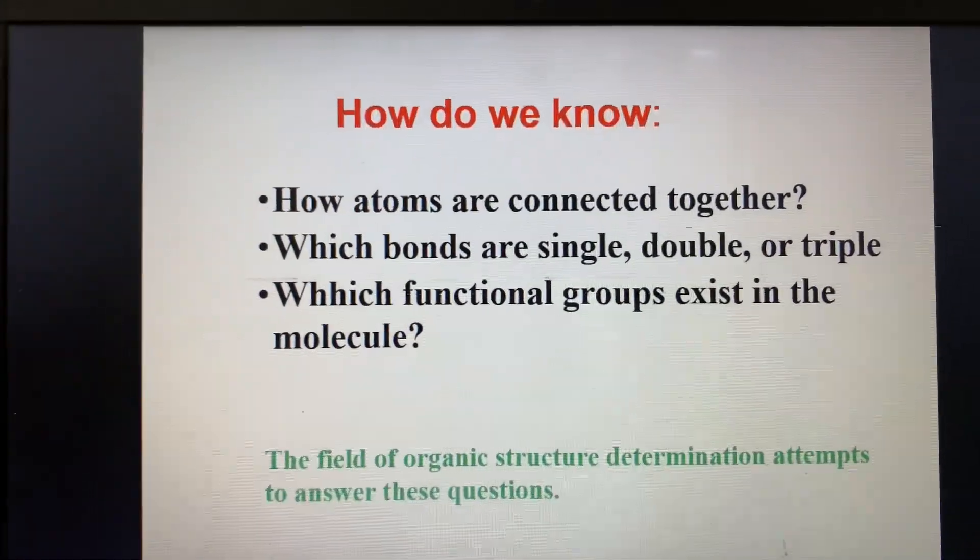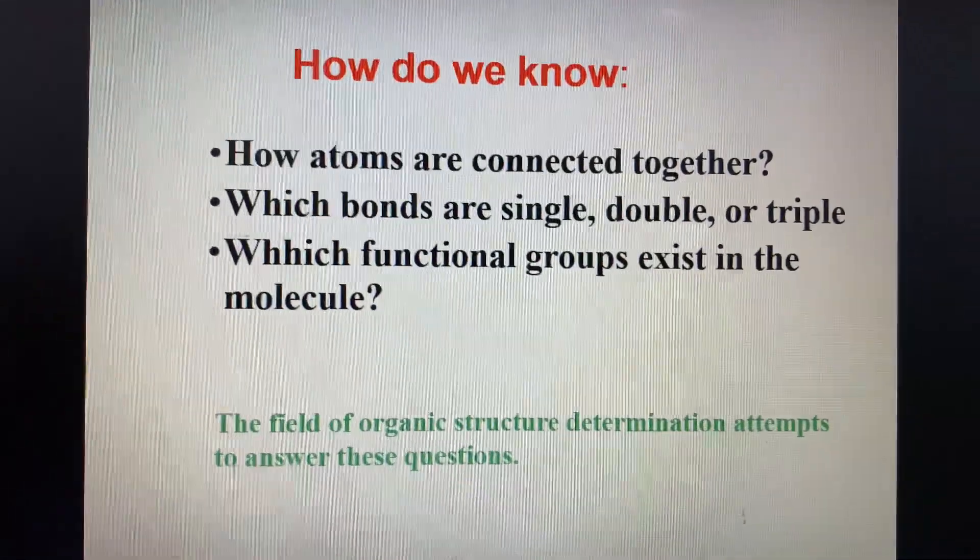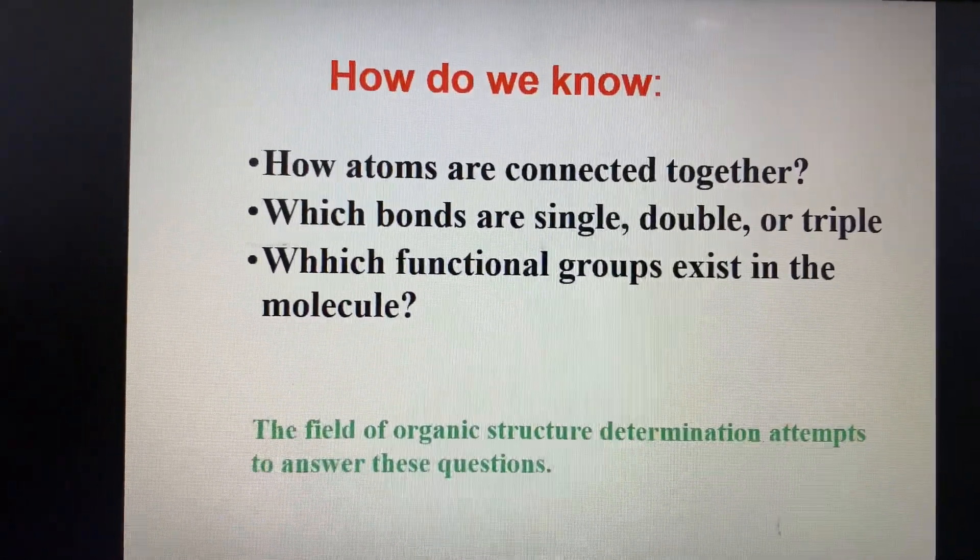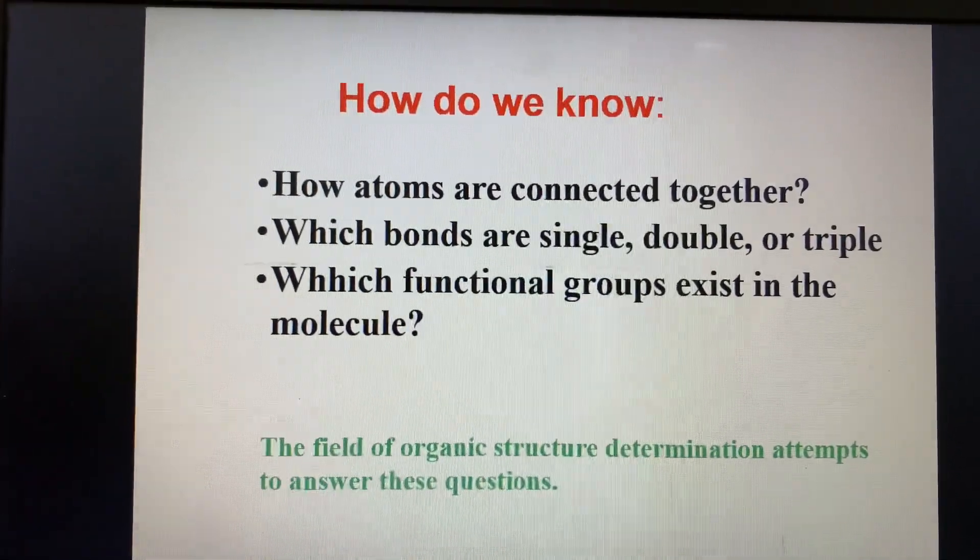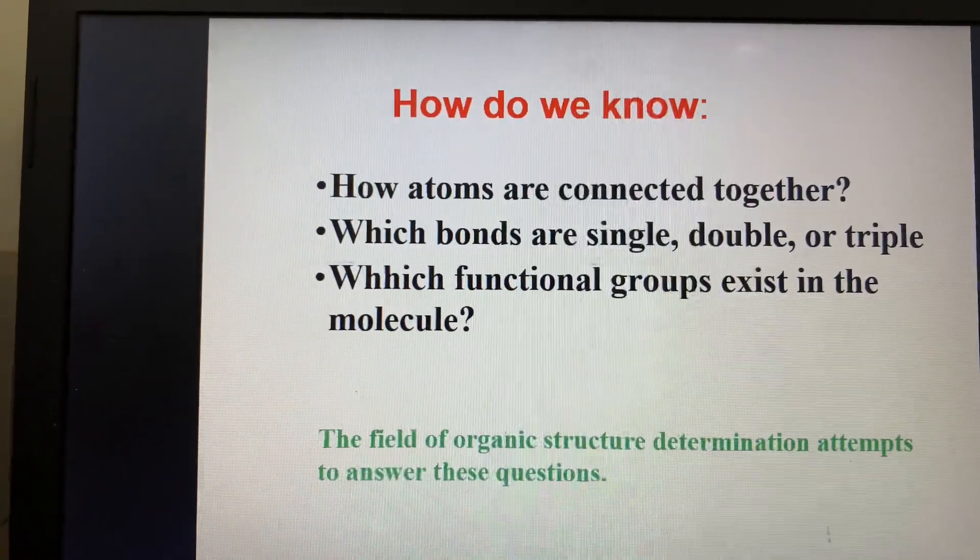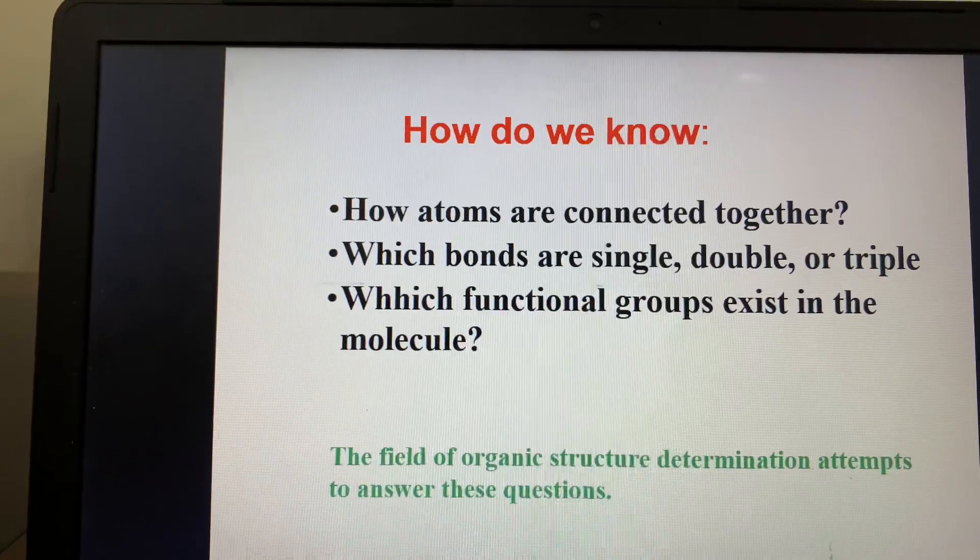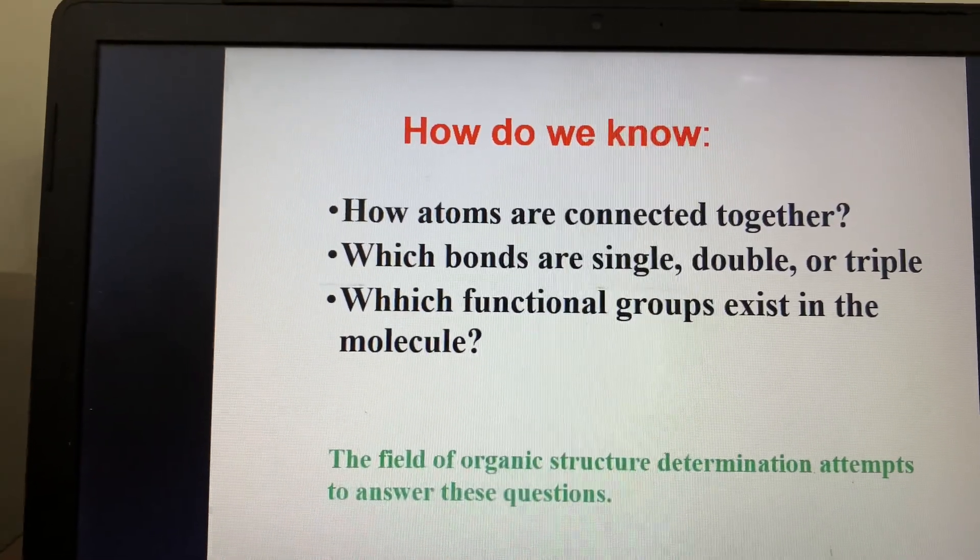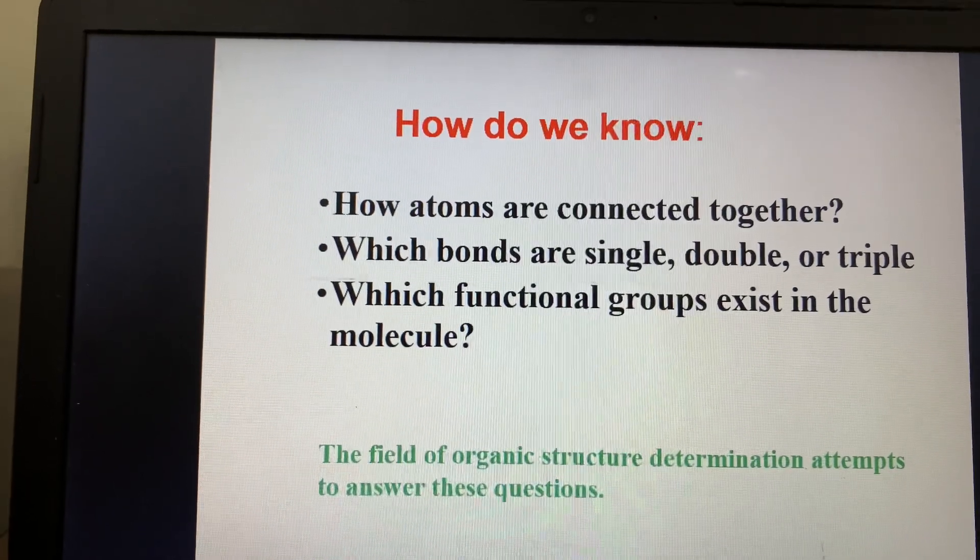The initial step is we need to know how atoms are connected together, which bonds are single, double, or triple, and which functional groups exist in the molecule. By solving these three questions, we can majorly come to the structure of any molecule.